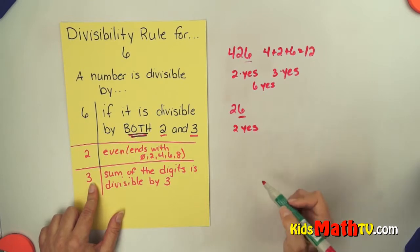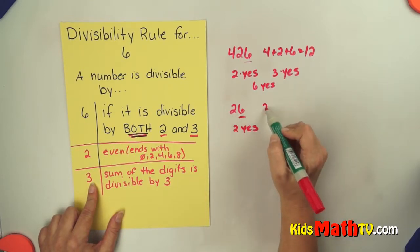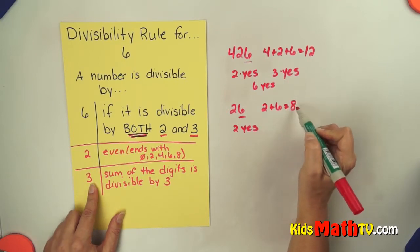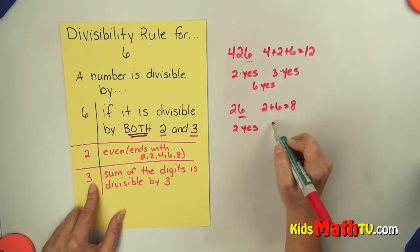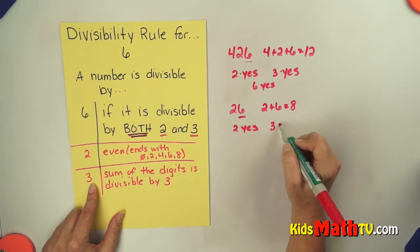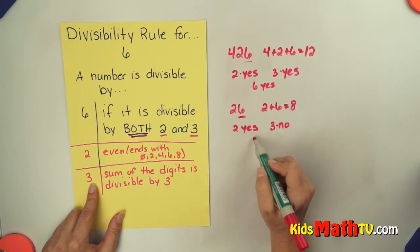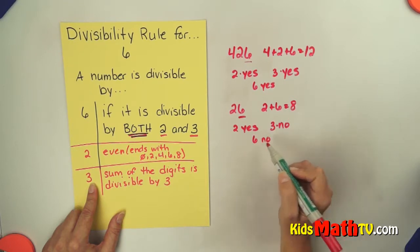Let's check if it's divisible by 3. If I add the digits, 2 plus 6 is 8. Does 8 divide by 3? No, it does not. So this number is not divisible by 3. So therefore, since it's not divisible by 3, it is not divisible by 6 either.